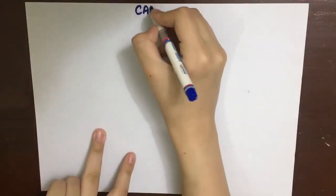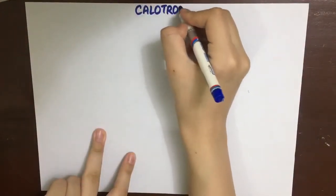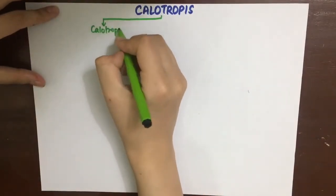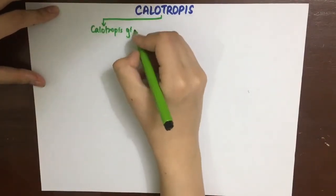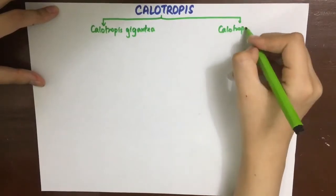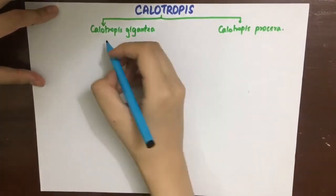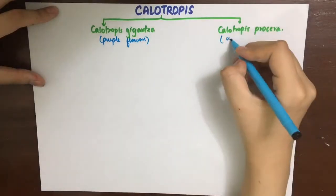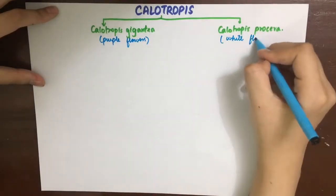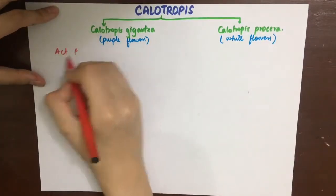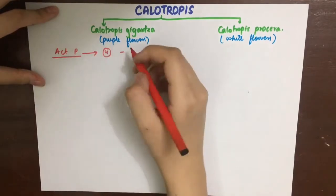Calotropis is a poisonous plant having two forms: Calotropis gigantea and Calotropis procera. The gigantea form produces purple flowers while the procera form produces white flowers. There are four important active principles: Oscarin, Calotoxin, Calactin, and Calotropin.